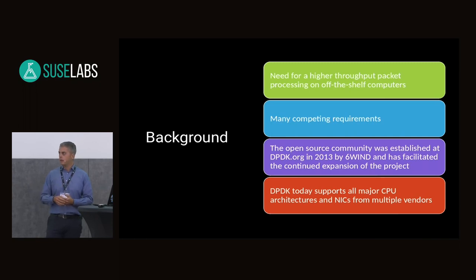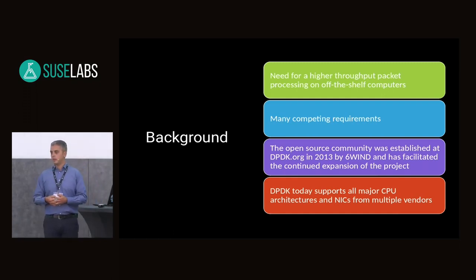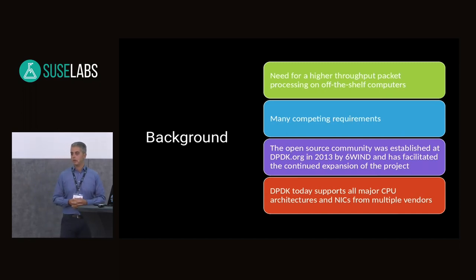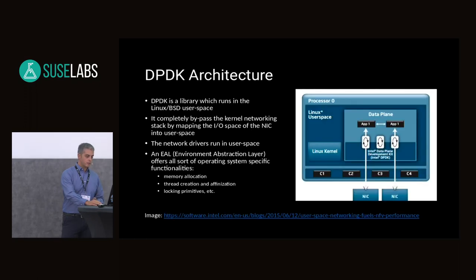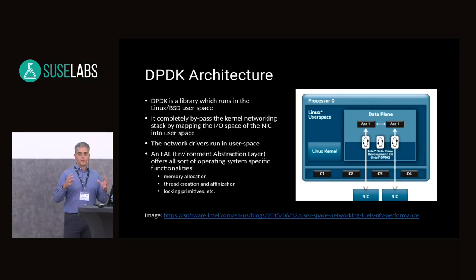6WIND took it over, open-sourced it, and since 2013 the community kept growing. There are now around 160 people contributing to it, more than 25 companies — it's quite a big community. Most important NICs are supported by DPDK: Intel, Mellanox, Broadcom, Qualcomm — you name them, they're all there, both in the kernel and in user space with DPDK. DPDK stands for Data Plane Development Kit, although these days it's not just used for packet processing but also areas like storage.